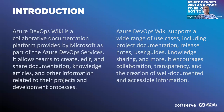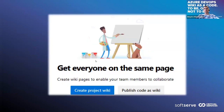As an introduction: Azure DevOps Wiki is a part of Azure DevOps services which allows teams to manage documentation, share knowledge, and handle additional use cases related to a project. Nowadays in Azure DevOps you have two options for maintaining wiki content: create a project wiki, or publish code as a wiki.